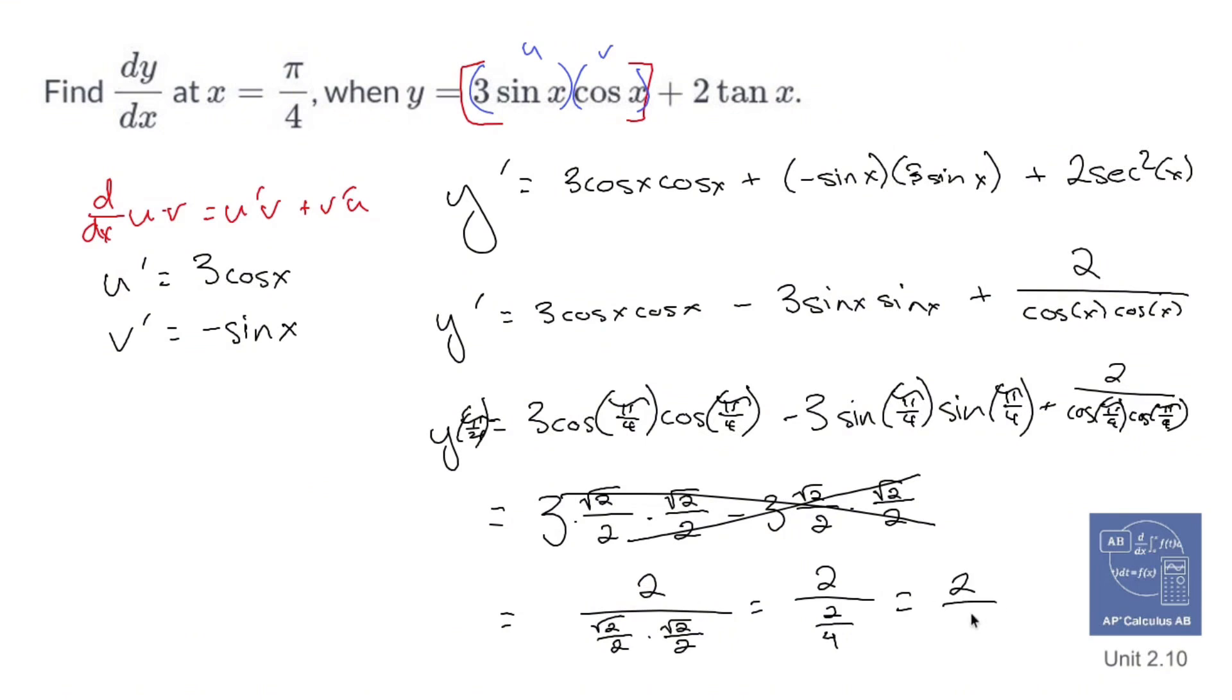So I get 2 divided by 1 half, which is the same thing as 2 times 2. And after all of that, you get 4.